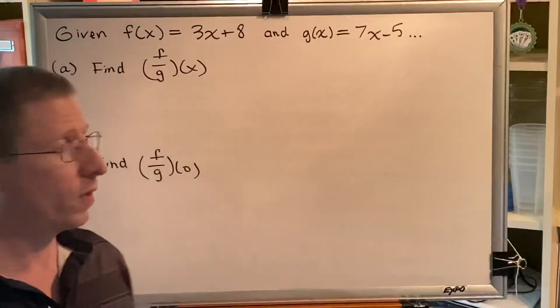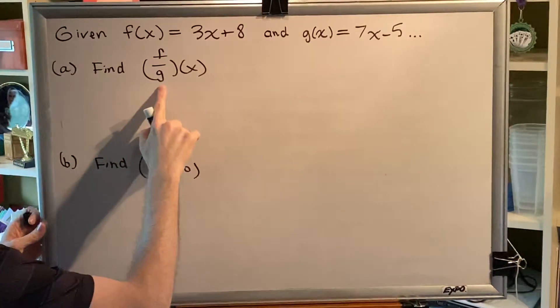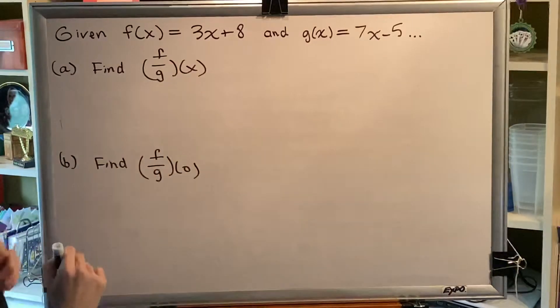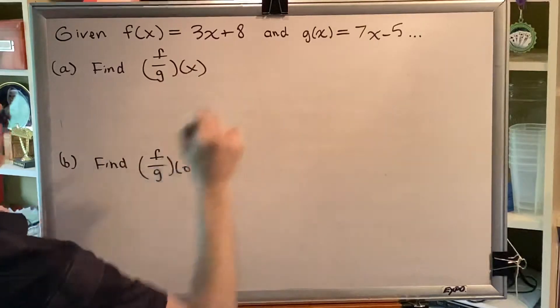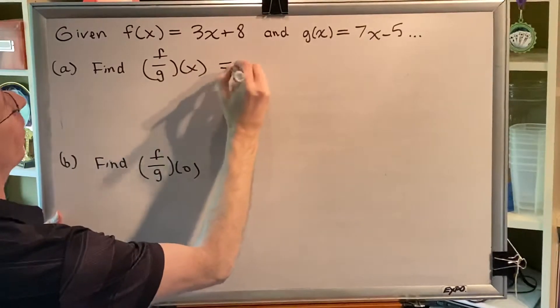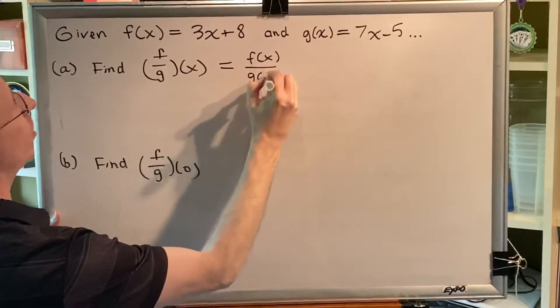Okay, so let's go ahead and solve this problem. The function has been named f over g. What that tells you is that you took the function f(x) and you took the function g(x) and you divided them. In other words, this is the same thing as f(x) over g(x).